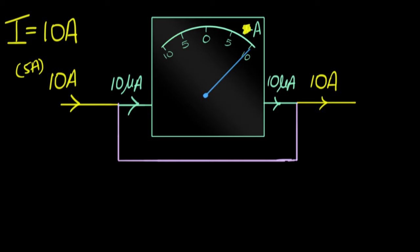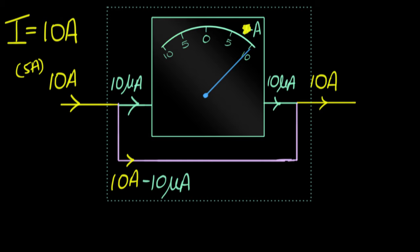So in this particular example, what we'll have to do is 10 microamperes flows over here. So the rest of the current, which would be 10 amperes minus 10 microamperes, that should flow through the alternate path. If we achieve this, we are done. Then you know what we could do? We could package it and make sure your friend does not see anything inside.